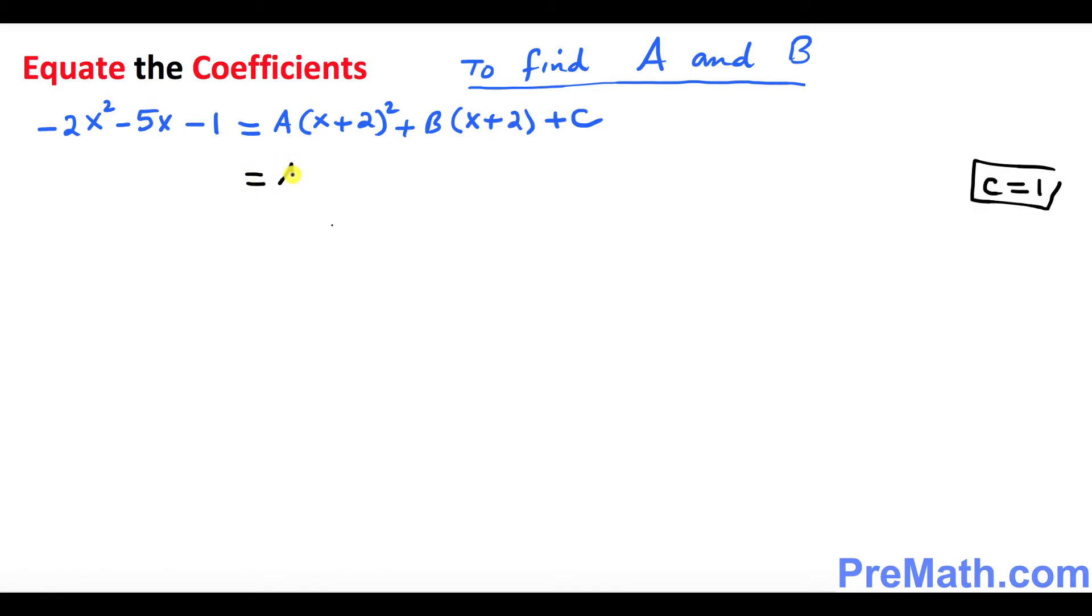So we're going to put down A times x plus 2 squared. You just multiply twice. The square is going to be x squared plus 4x plus 4, and then I want you to just simply distribute this thing. That's going to be plus Bx plus 2B plus C. We're going to distribute over here as well. So that's going to become Ax squared plus 4Ax plus 4A plus Bx plus 2B plus C over here. So let's go ahead and look at what we got.